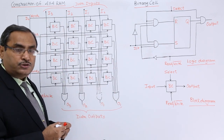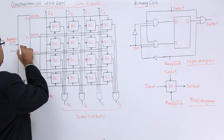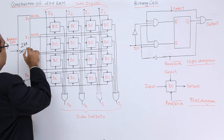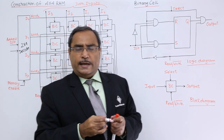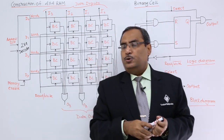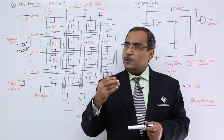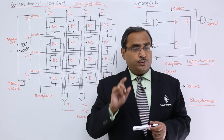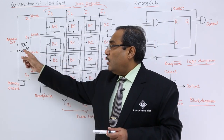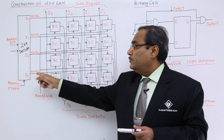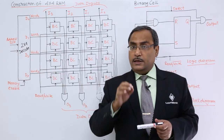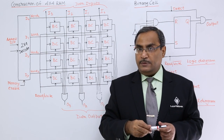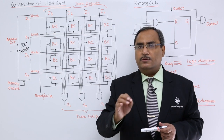Now let us look at the circuit construction in detail. Here we have a 2×4 decoder. A decoder is a combinational circuit with n input lines and 2-to-the-power-of-n output lines. Here n equals 2, so it has 2 input lines and 4 output lines. Depending upon the input line combination, one of the 4 output lines will be enabled at a time — that is the fundamental logic of the decoder circuit.